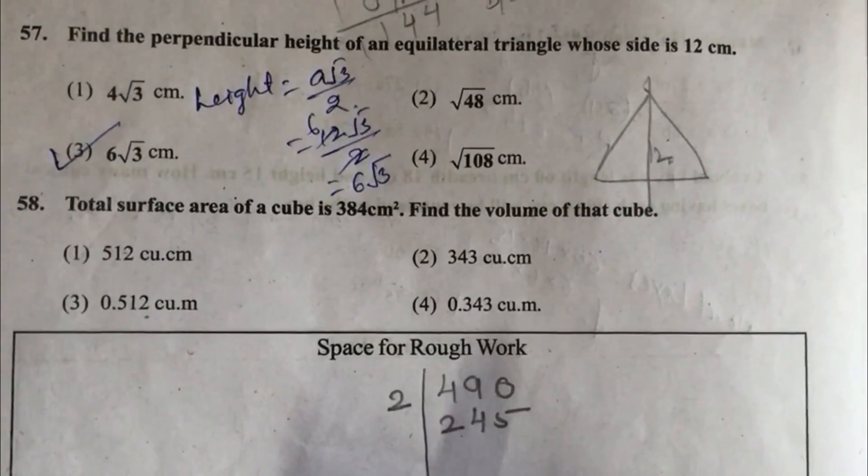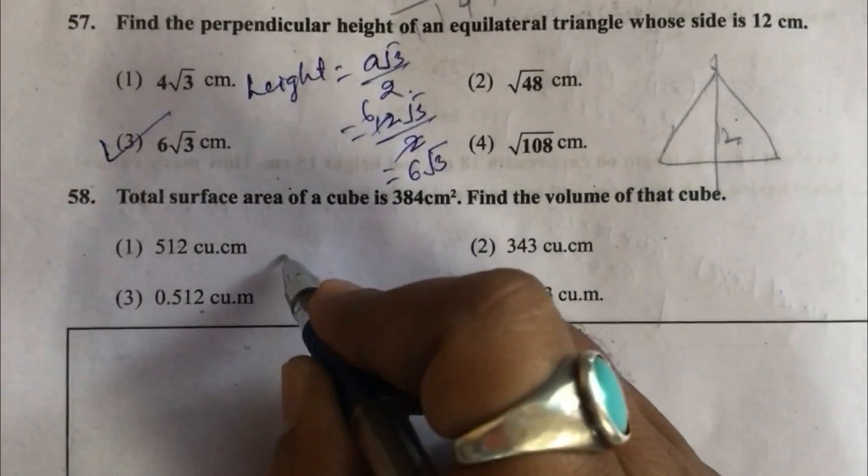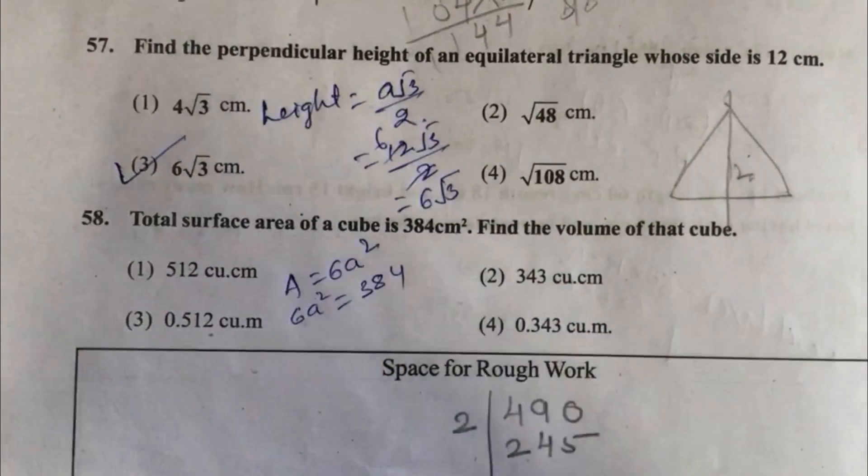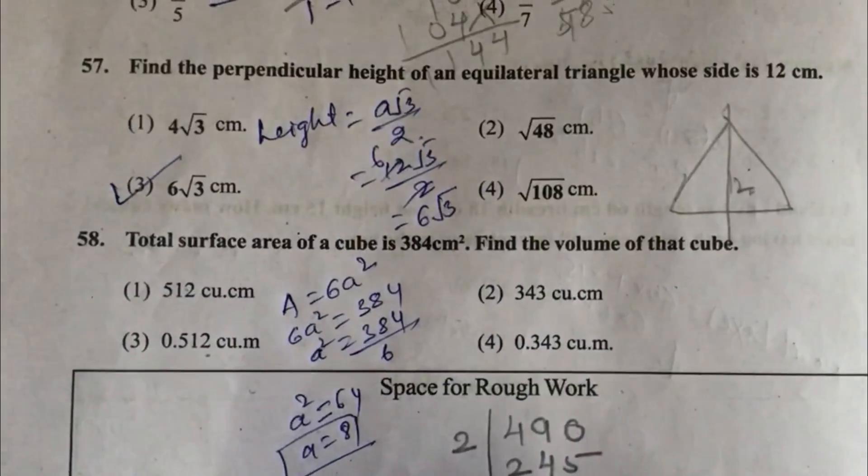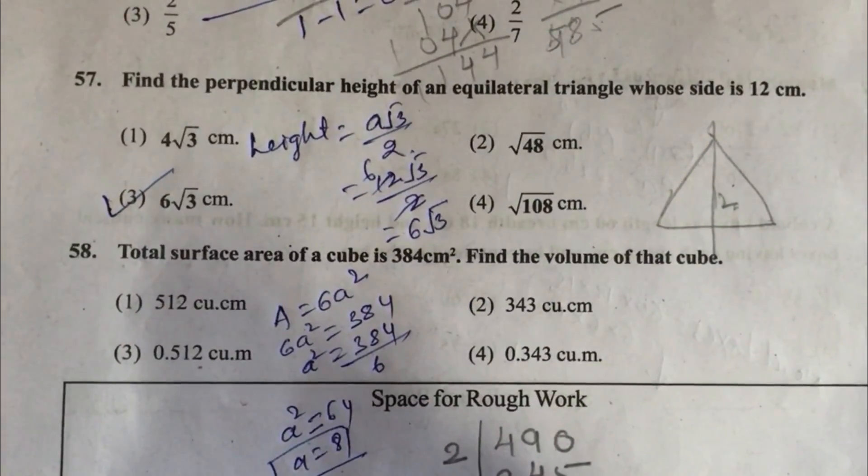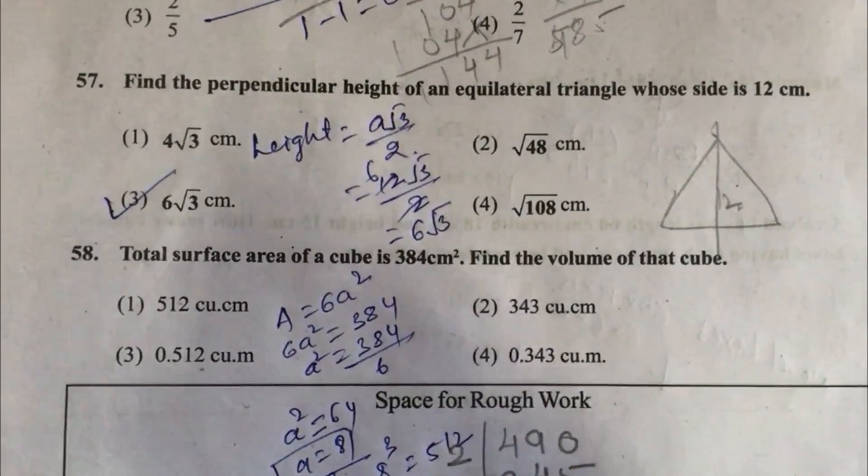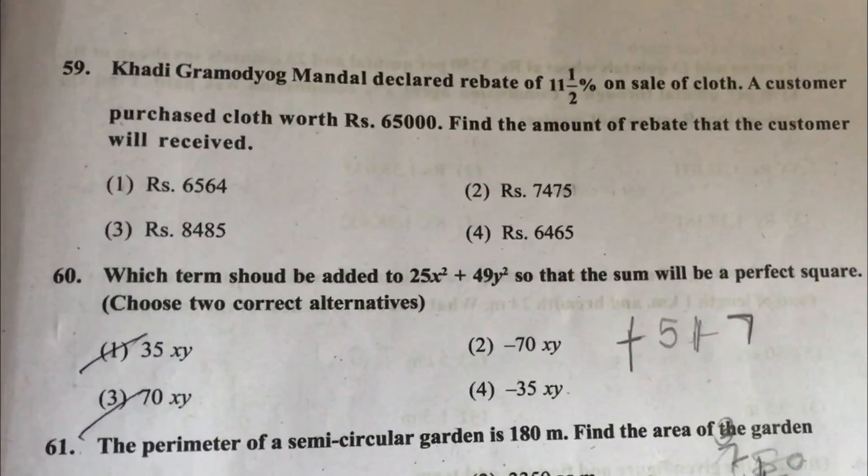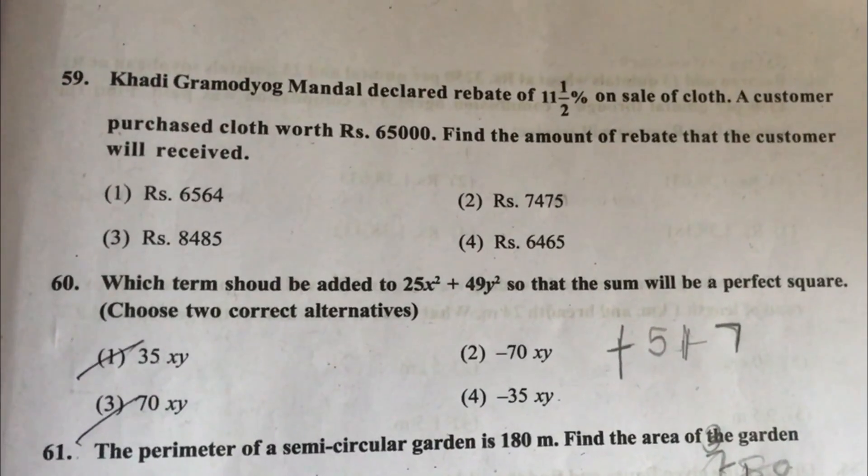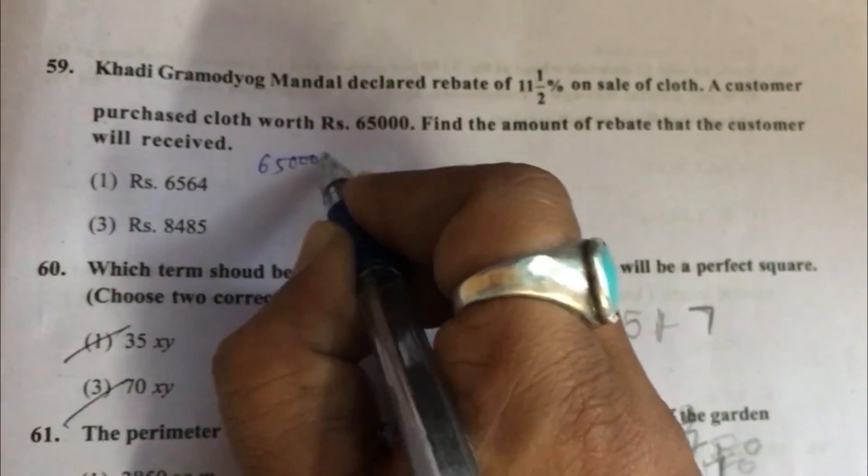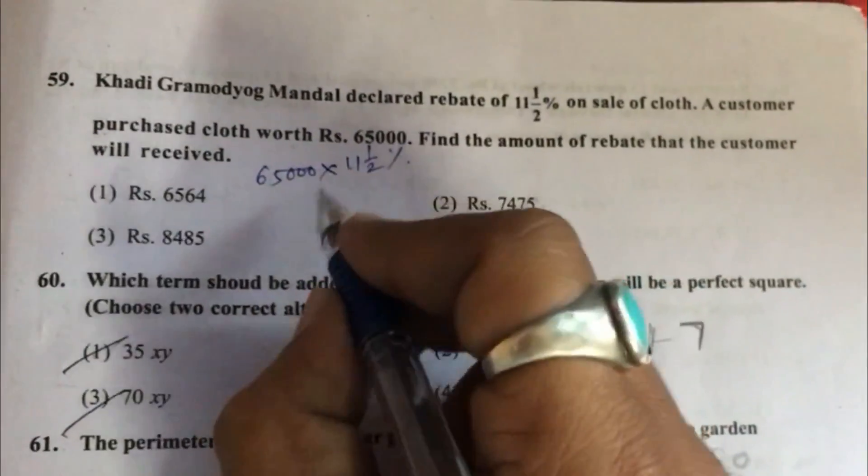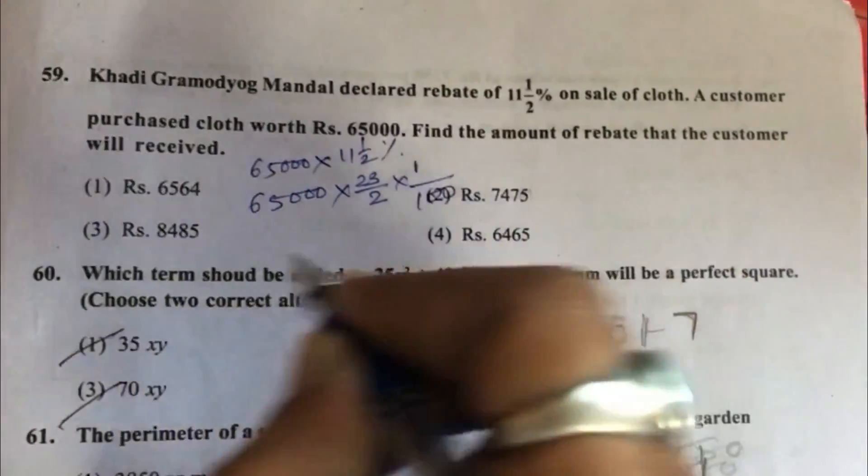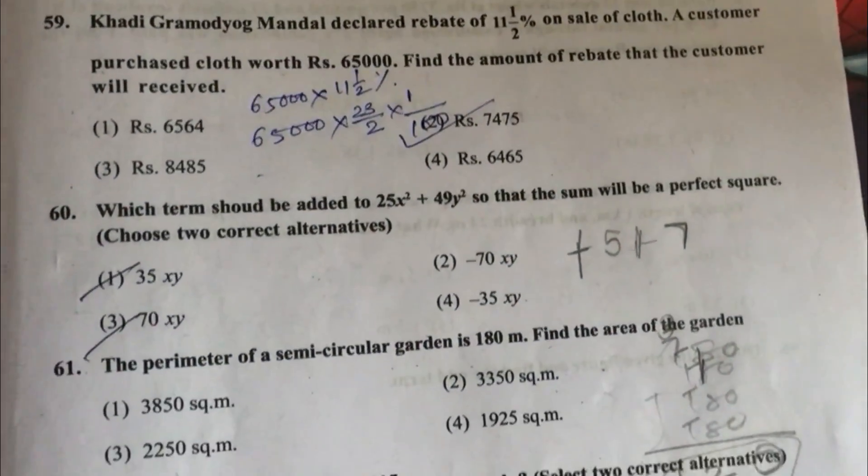Question 58: Total surface area of a cube is 384 centimeter square. Find the volume of that cube. Total surface area is 6a square, so 6a square equals 384 equals 64. A equals 8. Now we have to find the volume of the cube. The cube is side cube, that is 8 cube equals 512, so option 1. Question 59: Khadi Gramodyog Mandal declared rebate of 11.5% on sale of cloth. A customer purchased cloth worth Rs 65,000. Find the amount of rebate that the customer will receive. Rebate calculation gives answer 7475, option 2.